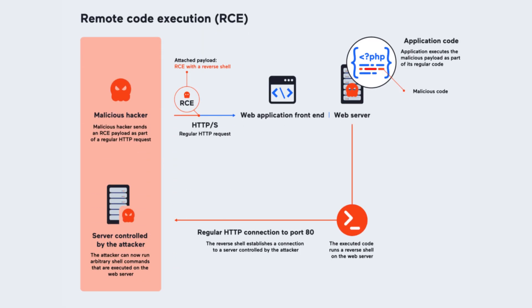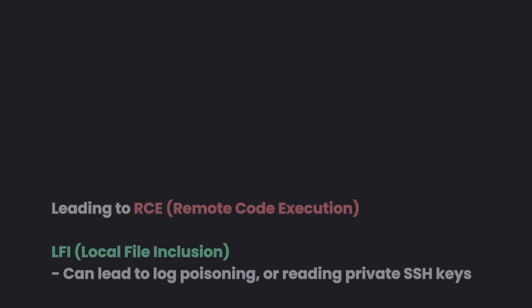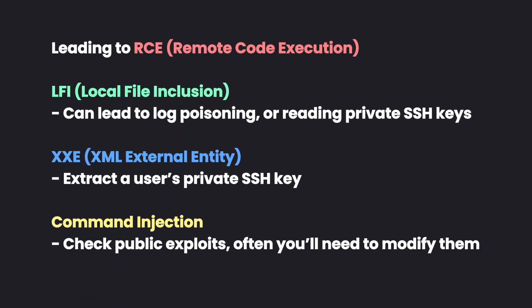Other than that, it's really about knowing which vulnerabilities can lead to RCE and focusing on those. Local File Inclusion (LFI) is very important because that can lead to a shell via log poisoning or allow you to read a private SSH key. The same thing with XXE — if you have a file read vulnerability there, that could also lead to reading an SSH private key. With LFI, you'd use log poisoning.